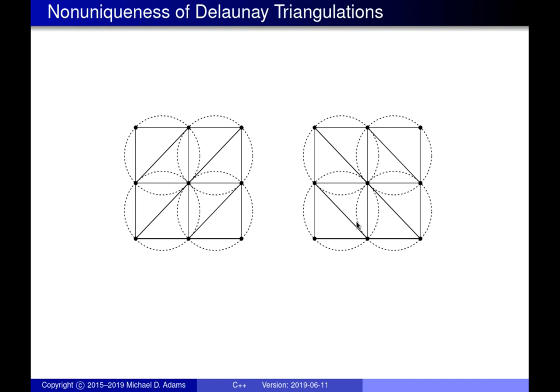The preferred direction Delaunay triangulation addresses cases where edges can be flipped one of two ways — both leading to valid Delaunay triangulations. With the preferred direction approach, of the two choices for the original edge and its flipped version, we choose the one whose slope is closer to some preferred slope.